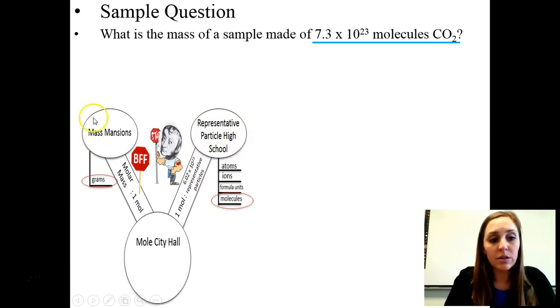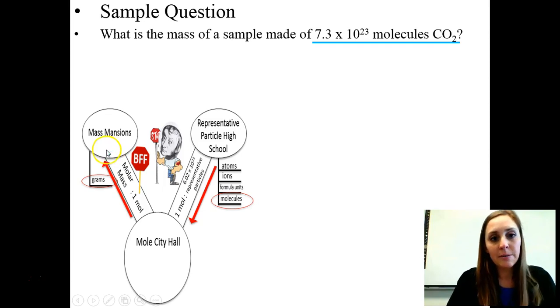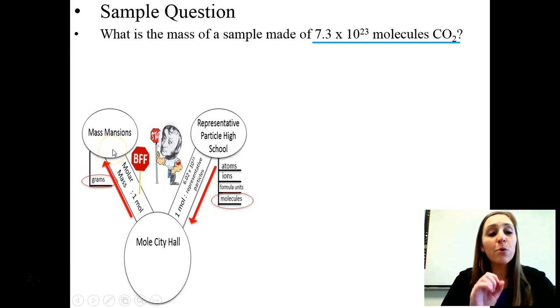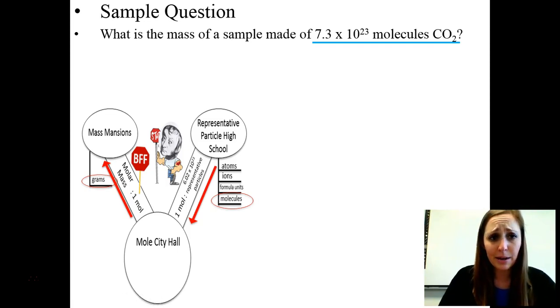So we want the mass. Mass is over here. We're going to convert this to grams. So to get from the high school to the mass, you can't just go straight there. You have to take the roads. So here's one road, or the first unit converter that we're going to use. We're going to go to Mole City Hall, and then you're going to take another road or unit converter to get up to the mansions.